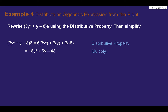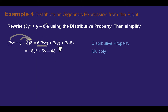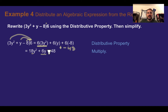Example 4: Distribute an algebraic expression from the right. Rewrite the quantity 3y squared plus y minus 8 times 6 using the distributive property, then simplify. Remember there's a hidden multiplication between a number and parentheses. So 6 times 3y squared is 18y squared, 6 times y is 6y, and 6 times negative 8 is negative 48 — which gives us minus 48. It doesn't matter which side the number is on; if it's connected to the parentheses, you are multiplying.